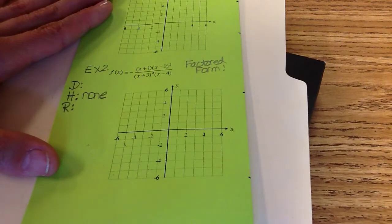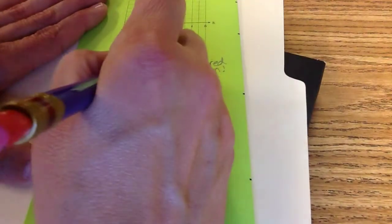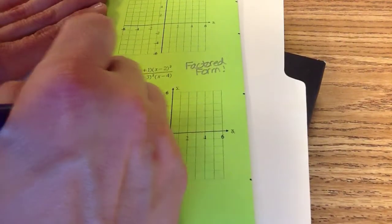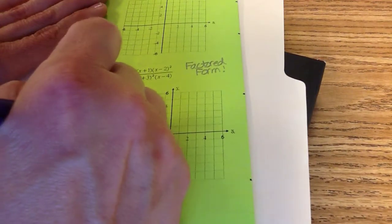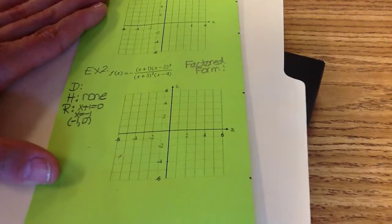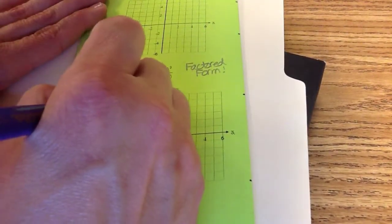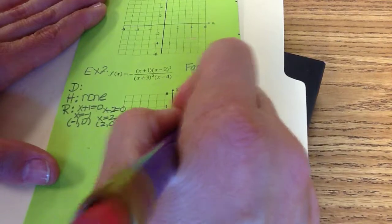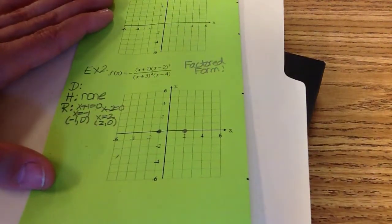Then we go on to R. R is your roots. Roots are based on the numerator. So I go to the numerator and I take each factor and put it equal to zero. So x plus one equals zero, so x is negative one. So I have a root at negative one, zero. We have another factor in the numerator of x minus two. So x minus two equals zero, so x is two. So two, zero. We have two roots.